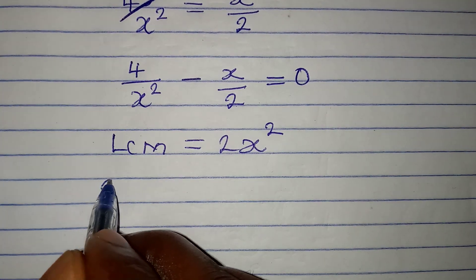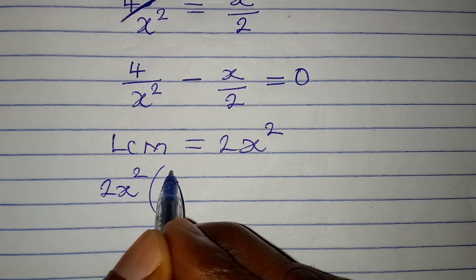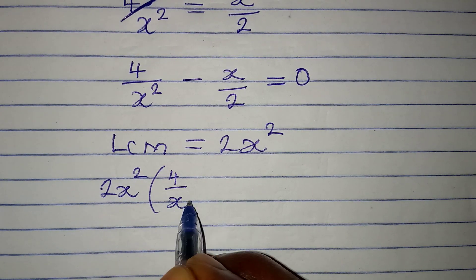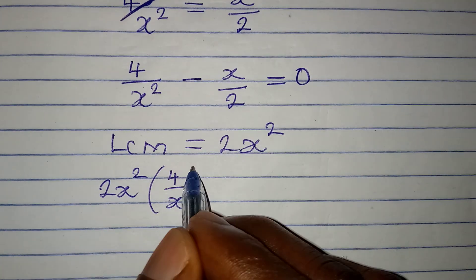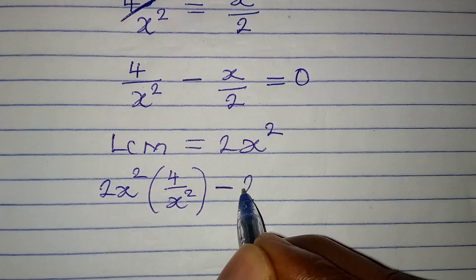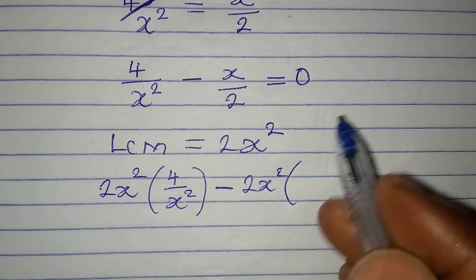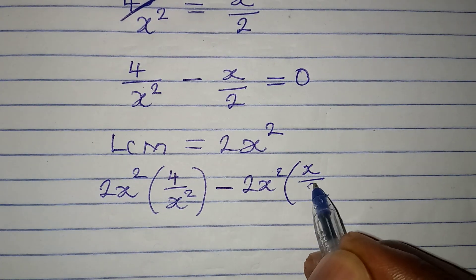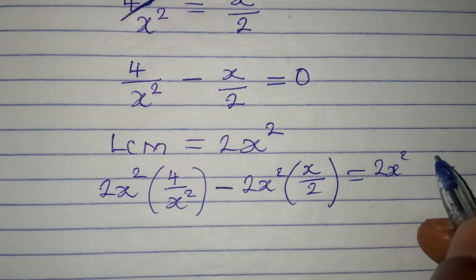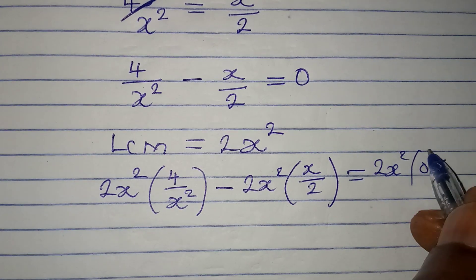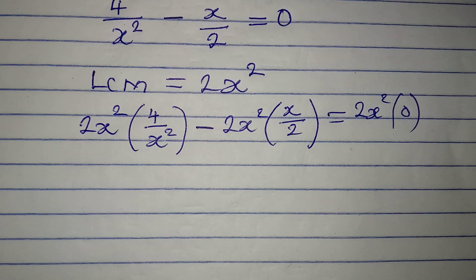Now multiply the LCM by the terms we have: 2x squared multiplied by 4 over x squared, minus 2x squared multiplied by x over 2, and this will be equal to 2x squared multiplied by 0, which gives us 0.